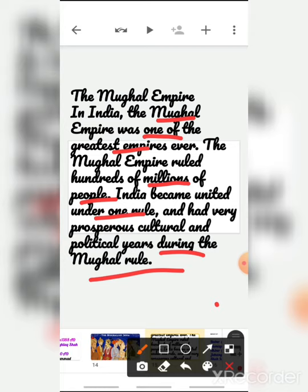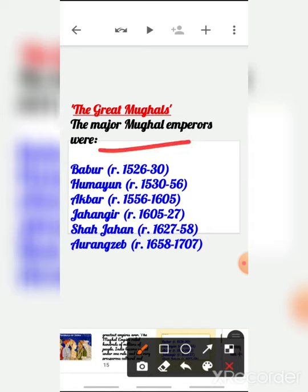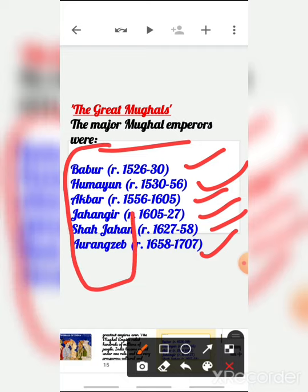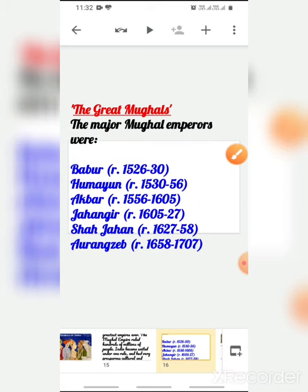The major Mughal emperors — the great Mughals — were: Babur (1526–1530), Humayun (1530–1556), Akbar (1556–1605), Jahangir (1605–1627), Shah Jahan (1627–1658), and Aurangzeb (1658–1707). You may have all heard these names before — Babur, Humayun, Akbar, Jahangir, Shah Jahan, Aurangzeb — they are the great emperors of the Mughal empire.